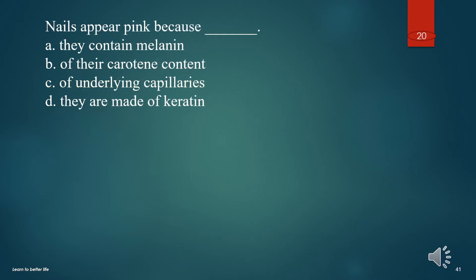Nails appear pink because? A. They contain melanin. B. Of their carotene content. C. Of underlying capillaries. D. They are made of keratin. The answer is C. Of underlying capillaries.